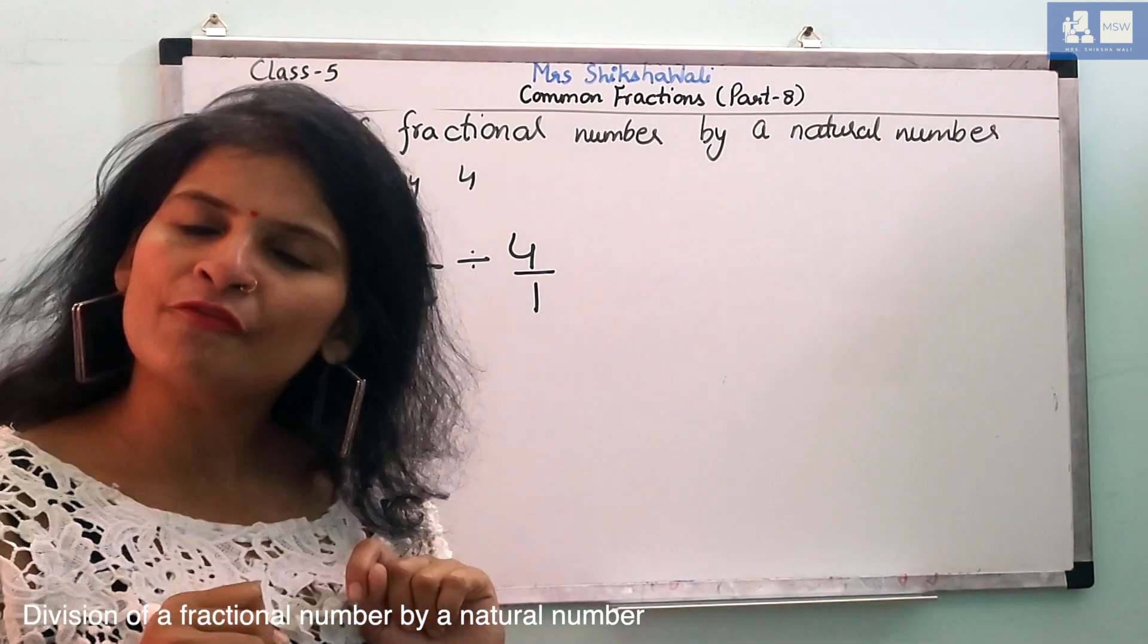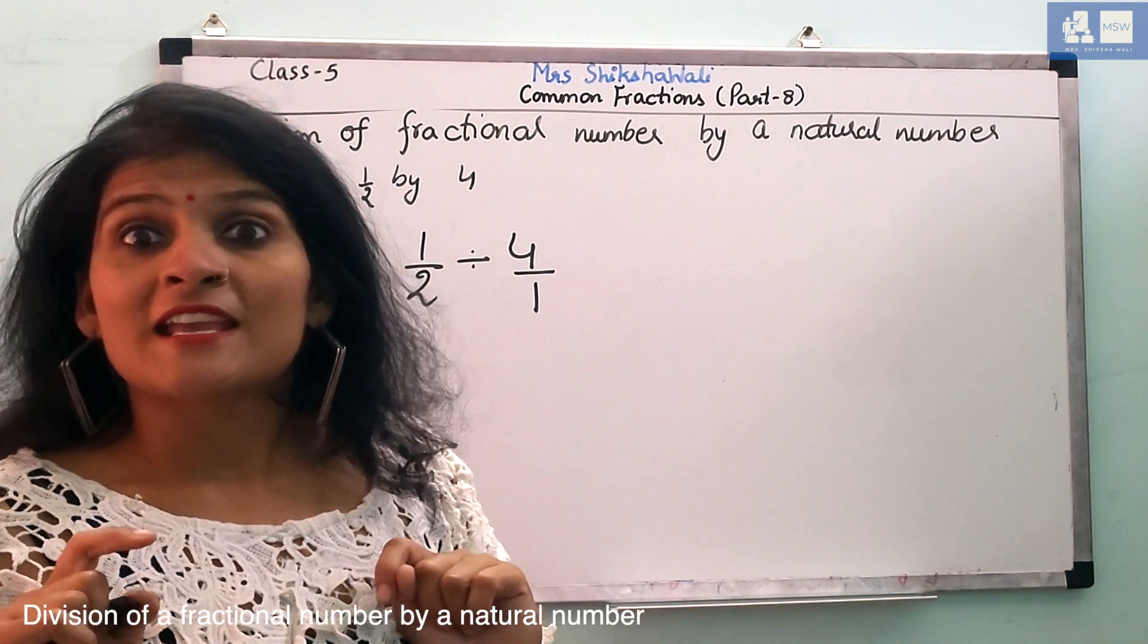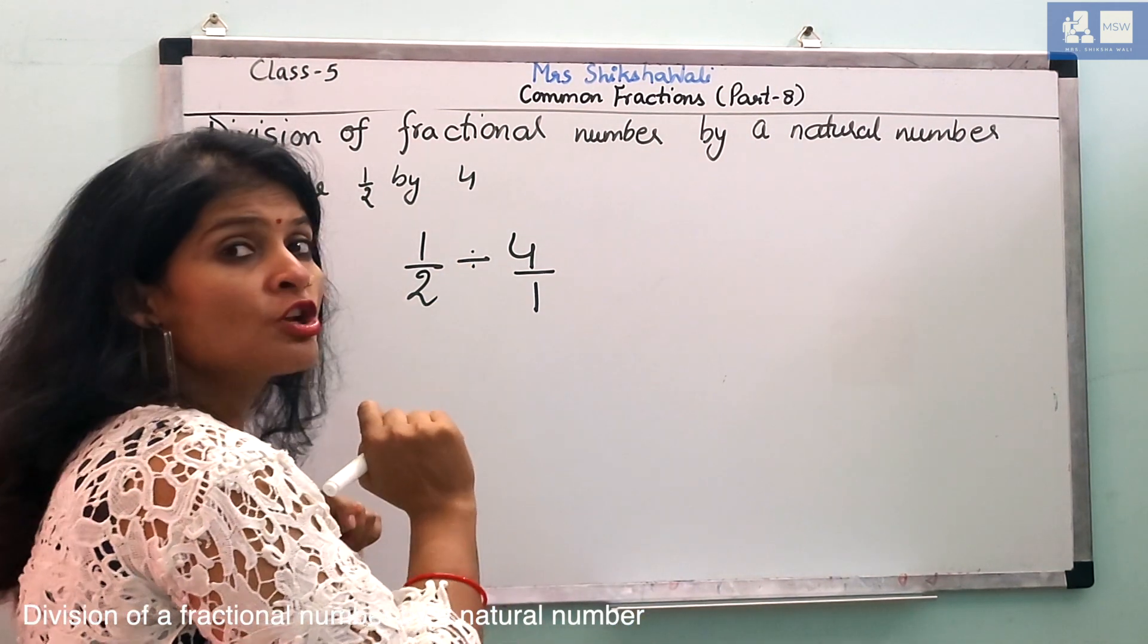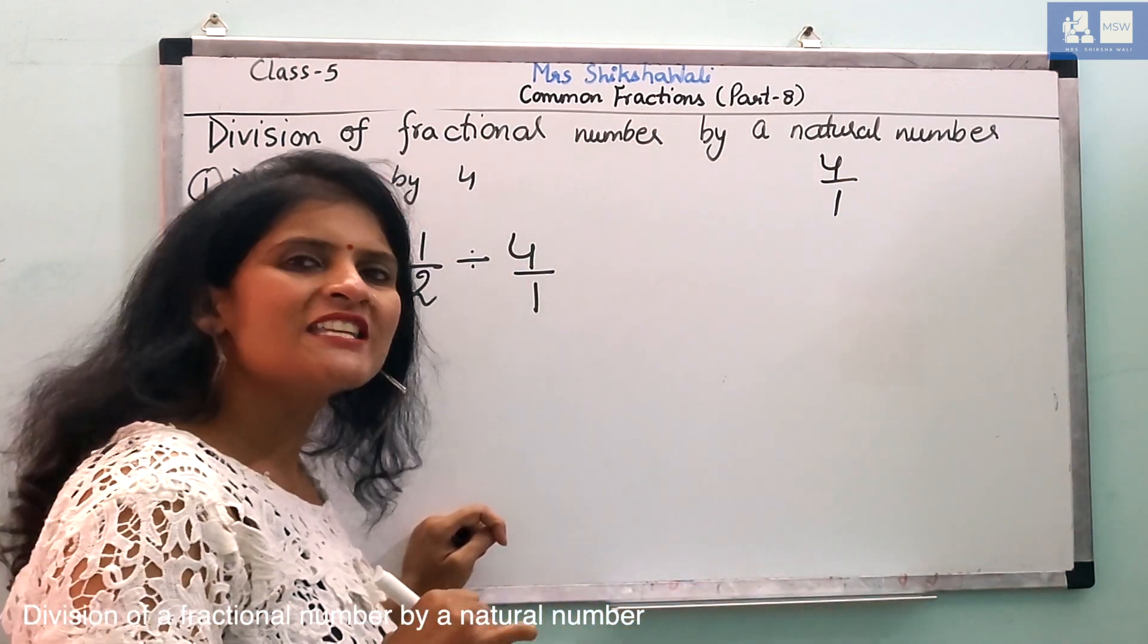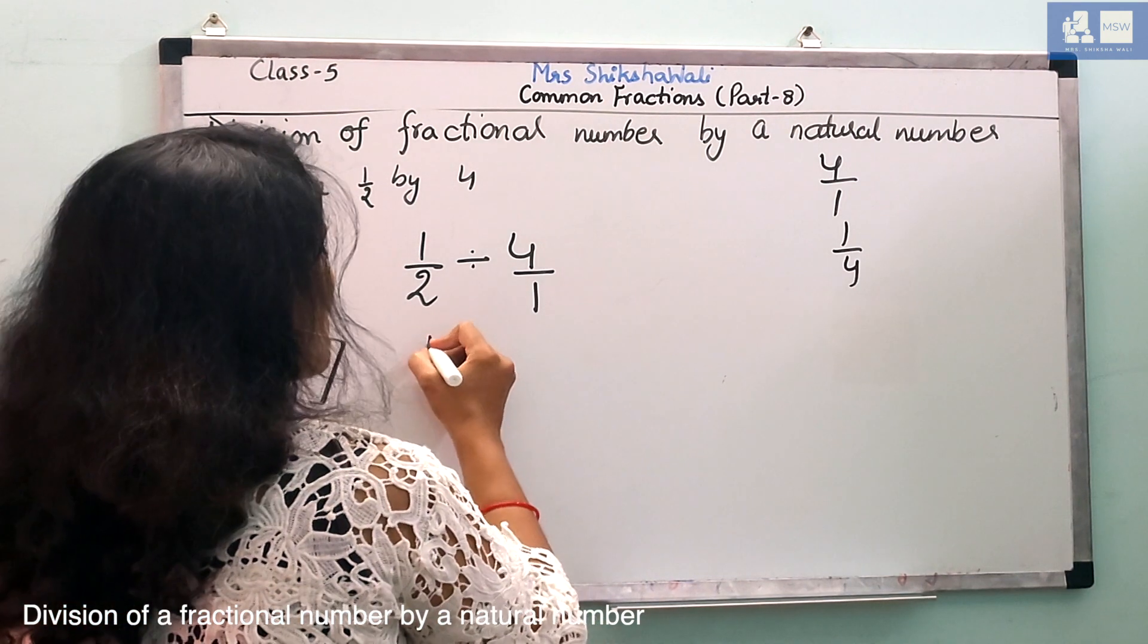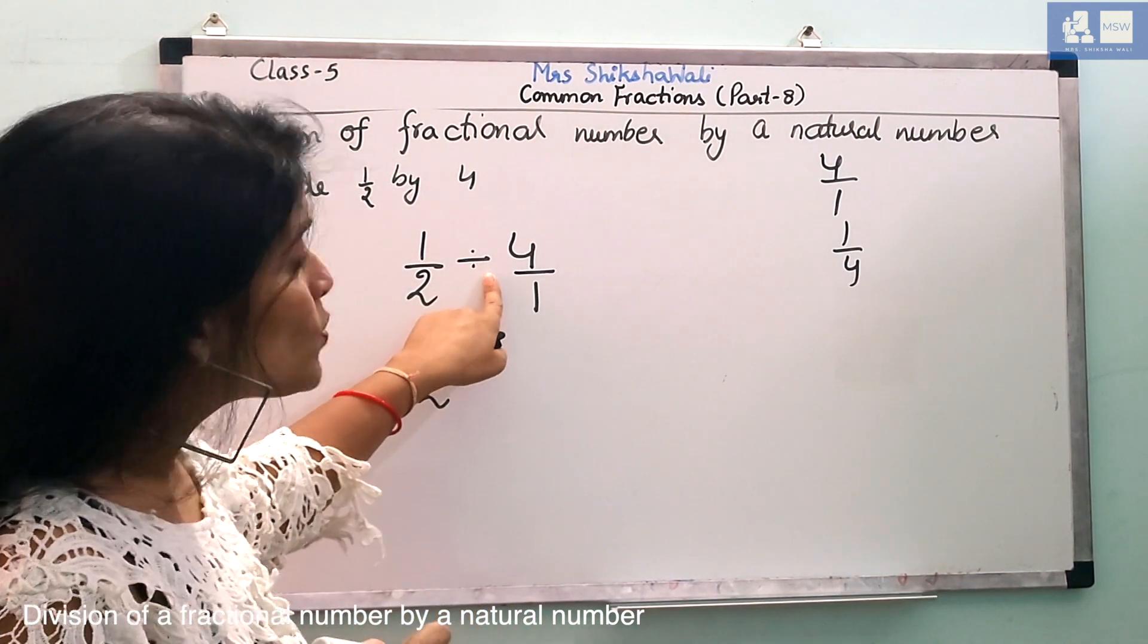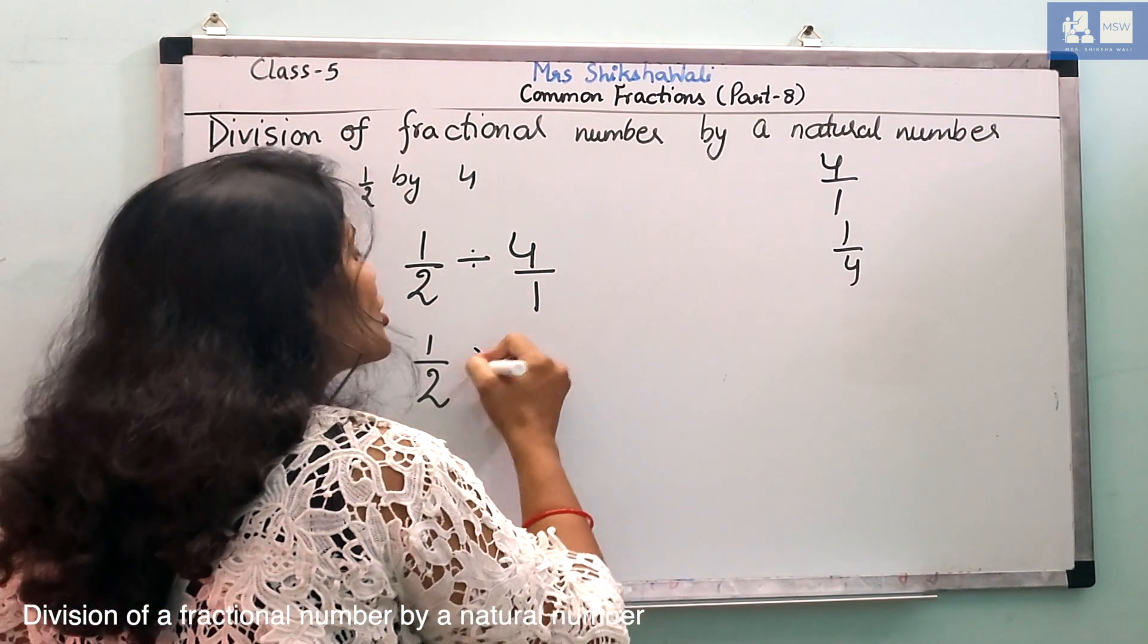Now, what do you need to do? 1 by 2 divided by 4. So, 4, first of all, we make a fraction, 4 by 1. Now, divide, how do we do? When we do division, what do we do? 4 by 1 is written. It's multiplicative inverse, 1 by 4. So, 1 by 2 is written. Now, if I change this division sign to multiplication.